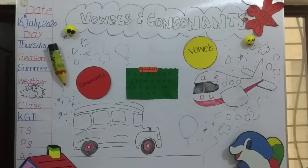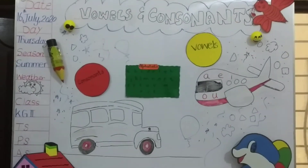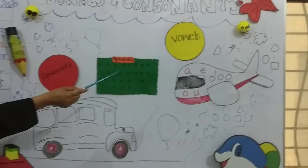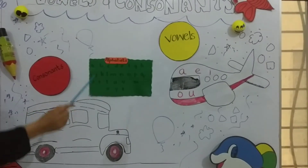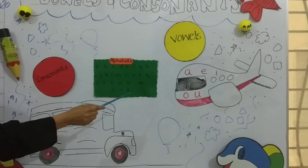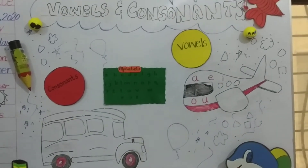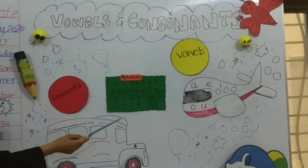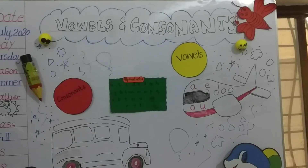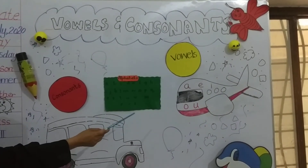The alphabets that are very naughty and went by aeroplane are A, E, I, O, U. These naughty alphabets are called vowels.